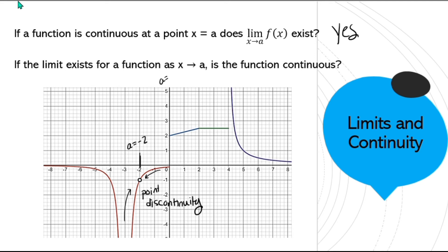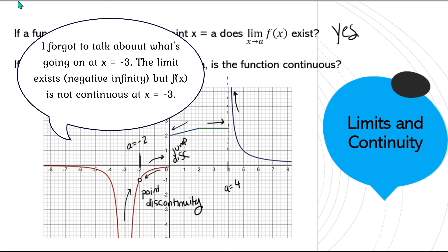If I look at a = 0: the limit doesn't exist because as we approach from the left we're approaching 0, and as we approach from the right we're approaching 2. The one-sided limits are not equal, so the limit does not exist at a = 0. That's a jump discontinuity. And at a = 4: as we come in from the left, f(x) appears to stay at 2.5, but as we come in from the right, f(x) is approaching infinity — so the limit does not exist there, nor is the function continuous there. We call this an infinite discontinuity.